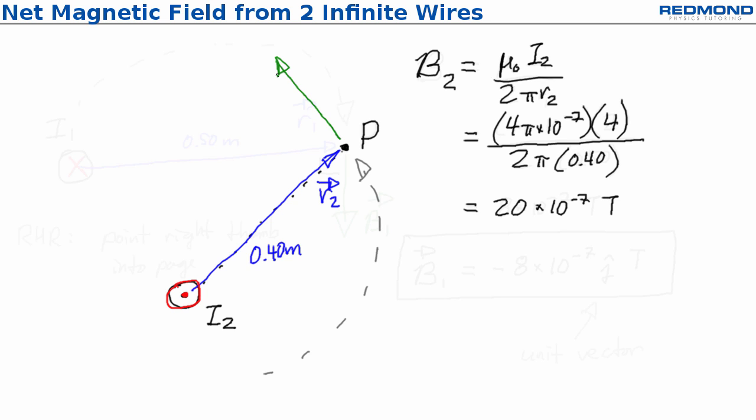To get the exact angle, I notice that inside the 3-4-5 triangle gives 37 degrees between R2 and the horizontal line, and since B2 is 90 degrees from R2, there must be 53 degrees remaining between horizontal and B2. The problem also asks for the net magnetic field, and I'll need vector components to add B1 and B2, so I'll go ahead and find B2x and B2y.